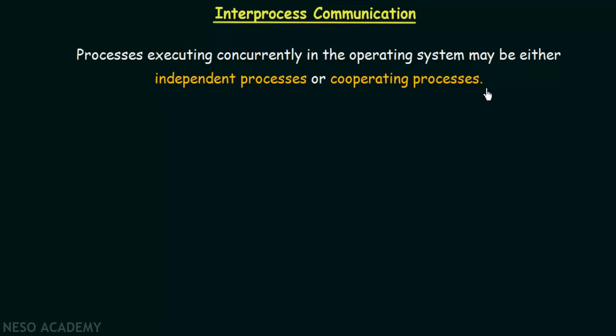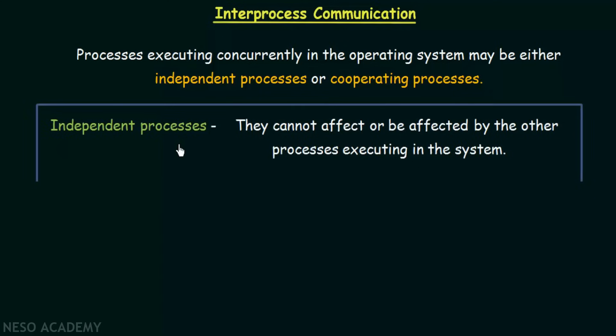Independent processes are those processes which cannot affect or be affected by the other processes executing in the system. If we say that the processes are independent, that means these processes cannot affect or cannot be affected by other processes executing in the system. All the processes may execute in their own ways and these independent processes are not affected by other processes and also they cannot affect other processes in the system.